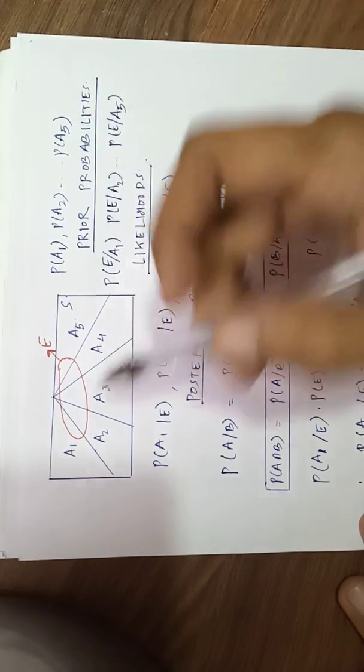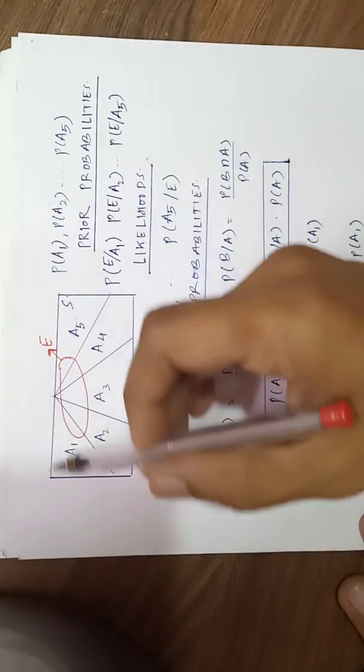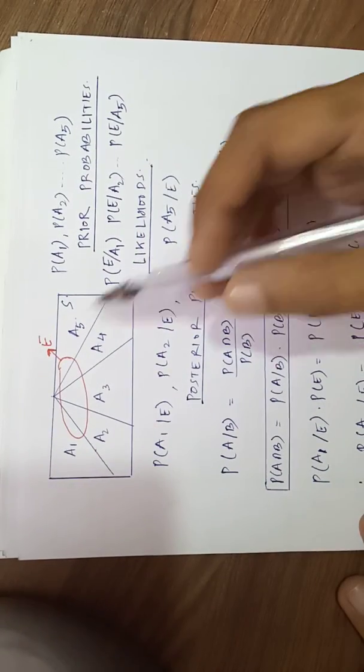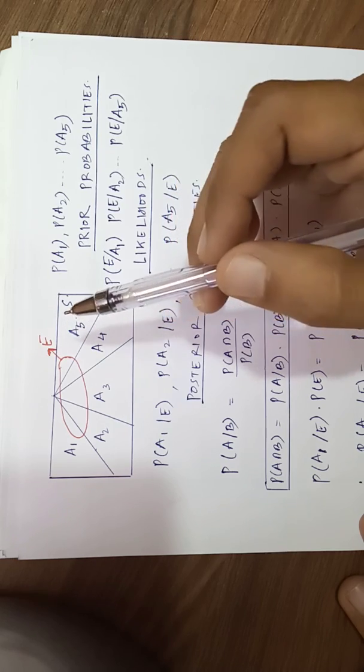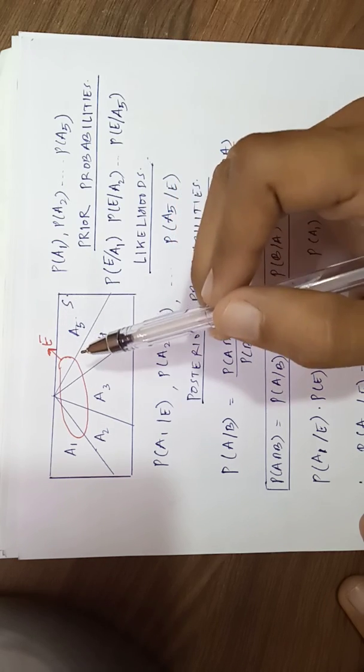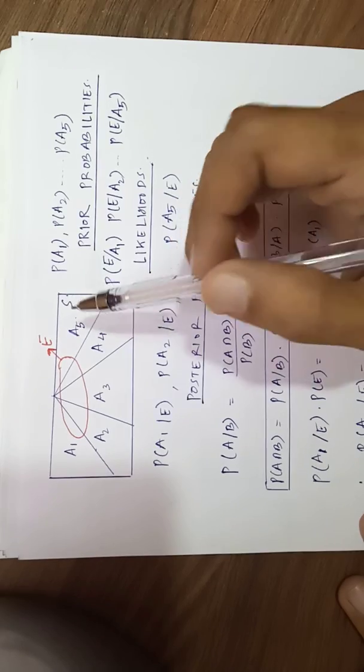Now what is the fundamentals? Let's say we have a sample space which we have represented by a rectangle. There are a1, a2, a3, a4, a5 - five mutually exclusive exhaustive events on this sample space.